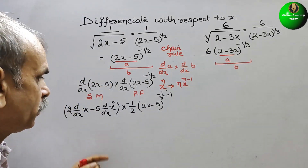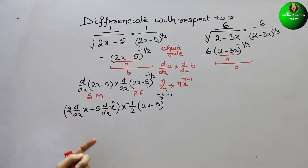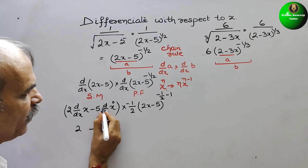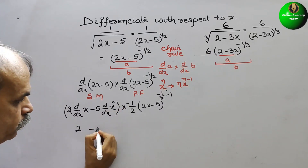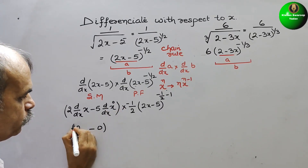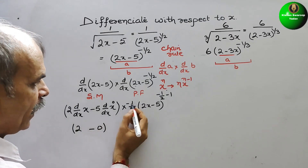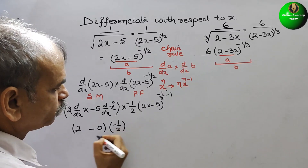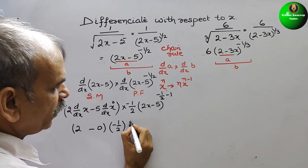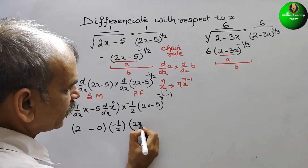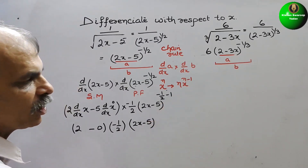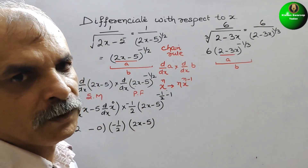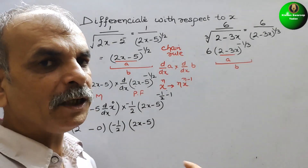Now differentiating: d by dx of x gives 1, so that becomes 2. The constant term minus 5 differentiates to 0. So we get minus 1 by 2 times 2x minus 5 to the power of (minus 1 by 2 minus 1). Taking LCM of the exponent: minus 1 minus 2 over 2 equals minus 3 by 2.